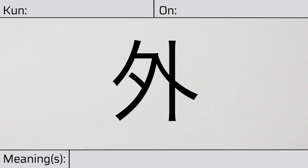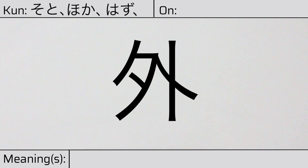Welcome to this lesson on Japanese Kanji. Today, we'll be discussing this character. This Kanji has kunyomi or Japanese readings of oto, hoka, hazu, or to. And it has onyomi or Chinese readings of gai or ge. This character has the meaning outside.